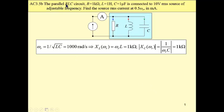We have a parallel RLC circuit. We know all three components: resistance, inductance, and capacitance. We know the supply voltage, its root mean square value. This source has an adjustable frequency, and our task is to find this current, its root mean square value, at half of the resonant frequency.